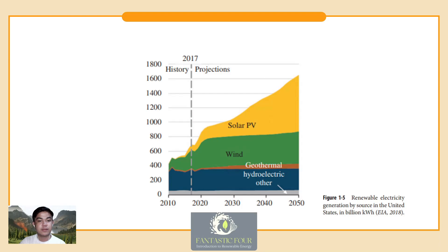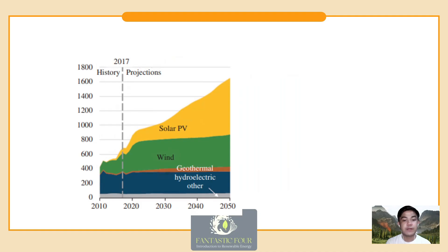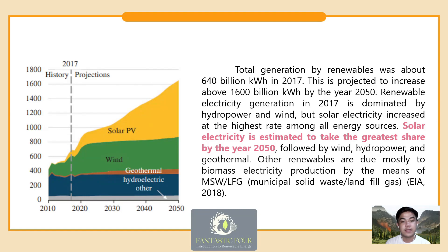We can conclude that renewables are currently the fastest growing energy source in the world. Depletion and emission concerns over fossil fuel use and increasing government incentives can cause even higher growth in the use of renewables. The fastest growing renewable sources are solar and wind. By end of 2017, hydroelectric, geothermal, and wind power generation technologies are able to compete economically with fossil fuel-based electricity generation, but solar electricity generation is still expensive. Projections from the EIA indicate that by 2050, solar electricity will take the greatest share in electricity generation.